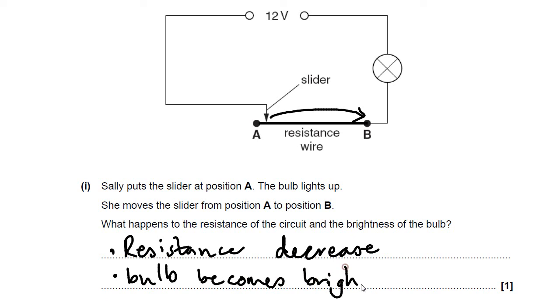You do need both parts of that answer, because it says: what happens to the resistance and the brightness of the bulb? Let's move on to the next part.